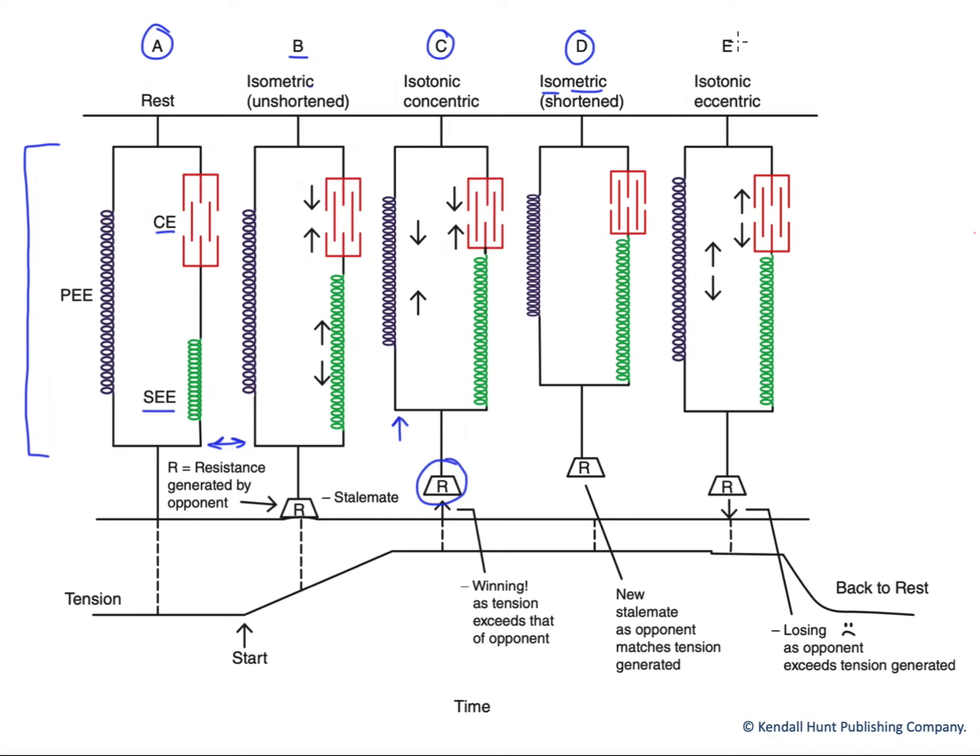Then finally, over here in E, our opponent generates more tension than we do. And what's going to happen is we're going to start to lengthen this overall muscle again. And that's an isotonic eccentric contraction. We're still generating tension, but now the muscle is lengthening overall. There's still tension on the series elastic element, still stretched, because we're still contracting here. But we're losing ground on the thin filaments now. We're actually lengthening those sarcomeres. And so the overall muscle will lengthen. The parallel elastic will be stretched. And eventually, we will lose our bout to our opponent here.